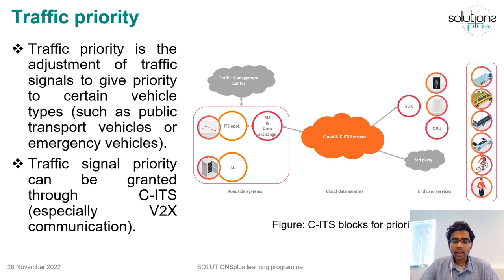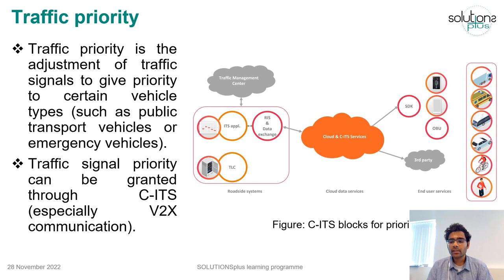Now we take a look at some examples of traffic management measures for urban traffic. The first measure is traffic priority. Traffic priority is a measure where traffic signals are adjusted to provide priority to certain vehicle types such as public transport or emergency vehicles. With the emergence of vehicle-to-infrastructure communication, or V2I, traffic priority can be granted through the Cooperative ITS (C-ITS) architecture. The figure in this slide shows the blocks for priority provision under the C-ITS architecture.